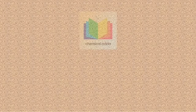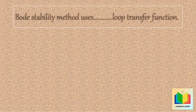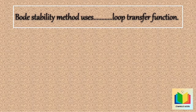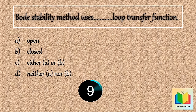Hello friends, let's see the multiple choice questions on process control. In each question you have 10 seconds to solve. If you know the answer you can comment in the comment box. First question: Bode stability method uses dash loop transfer function. Options: A) open, B) closed, C) either A or B, D) neither A nor B. Your time starts now. 10, 9, 8, 7, 6, 5, 4, 3, 2, 1. Stop.